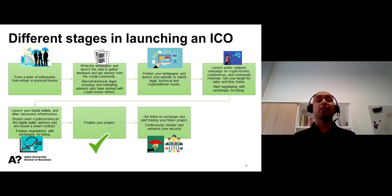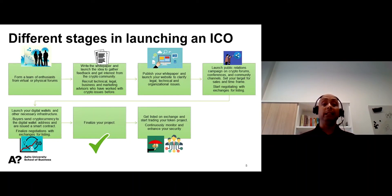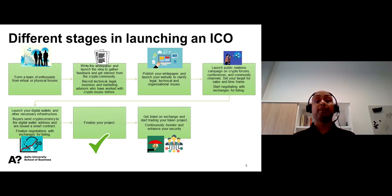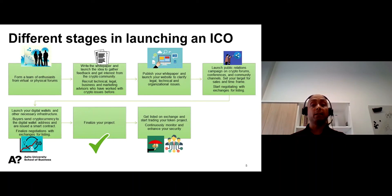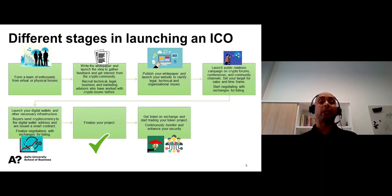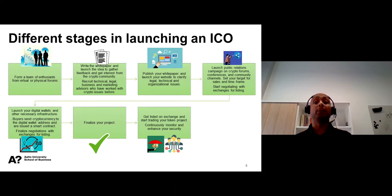As the sixth step, the team should finalize its project and carry out thorough digital, technical, and legal due diligence before launching. Finally, the token project should be listed on the selected exchange. It is important to keep monitoring the code for potential security errors and fix them not only before listing but also after the listing.